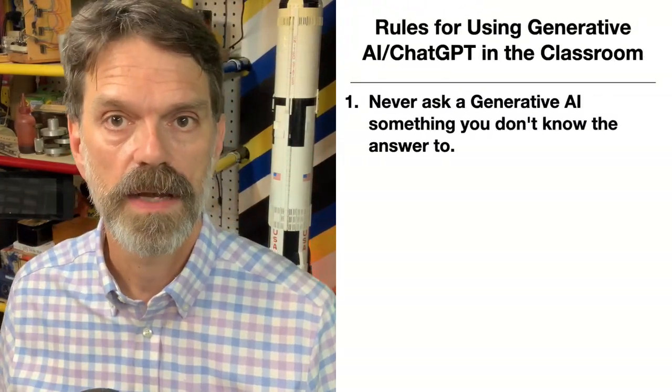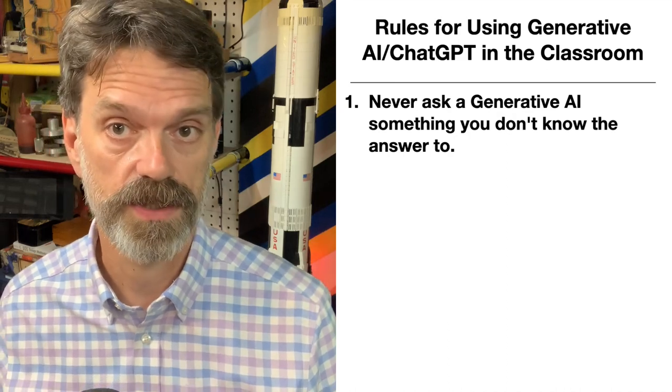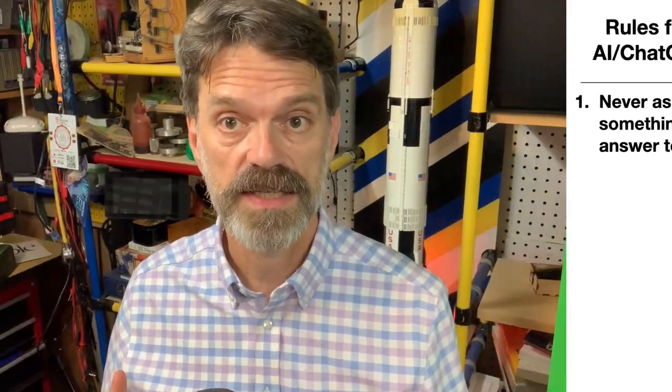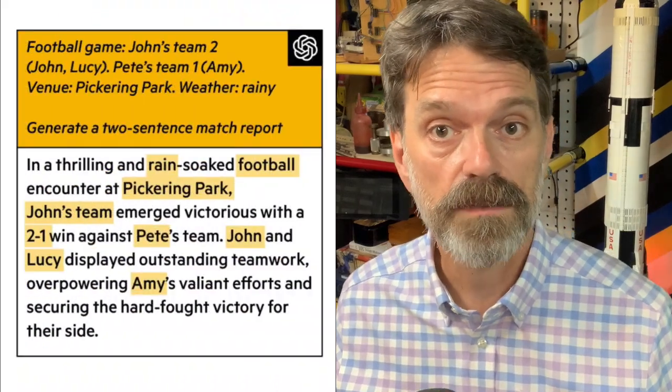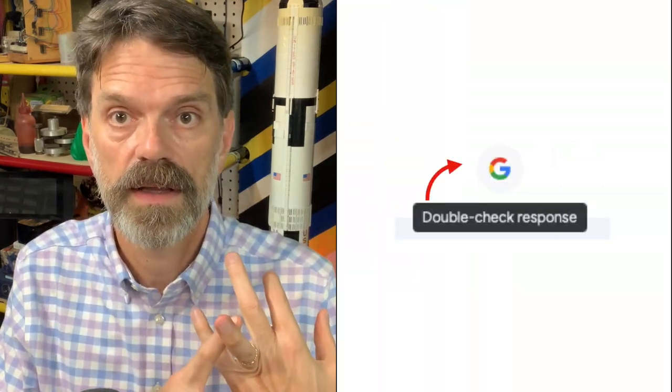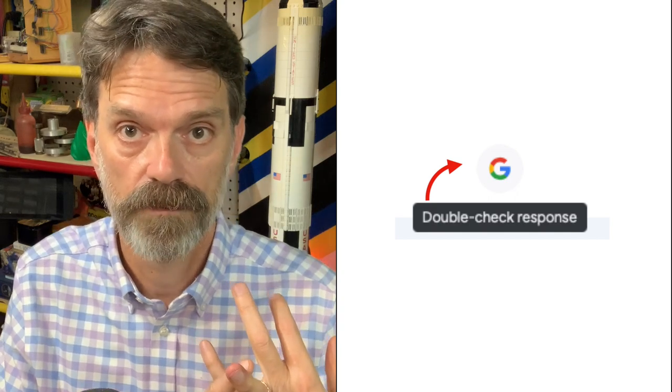Number one: never ask a generative AI something you don't already know the answer to. Remember, generative AI systems such as ChatGPT are statistical models and not the same as a search engine or a trusted expert. You can't trust anything an AI writes or produces, at least not at this point. Some pro tips: ask it for references. If you're using Google BARD, click the double-check response button. Try multiple systems — ask your same query under BARD, ChatGPT, and Claude. If one system comes up with something unusual compared to the other two, that might indicate a hallucination.